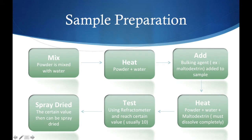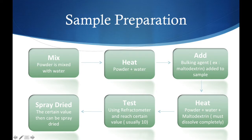For sample preparation, first the powder is mixed with water and then heated. After that, we add a bulking agent, for example maltodextrin, to increase the weight. We heat the mixture of powder, water, and maltodextrin and must make sure it dissolves completely. Then we test it using a refractometer to reach a certain value, usually 10, and then we can spray dry.